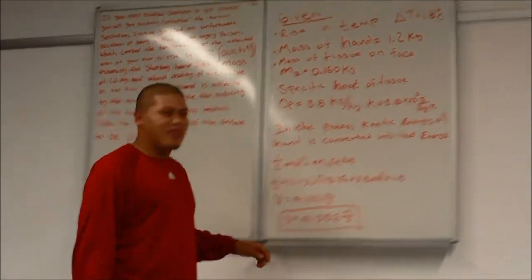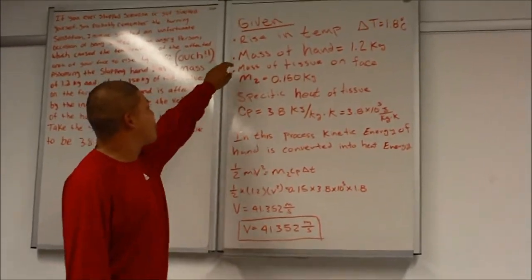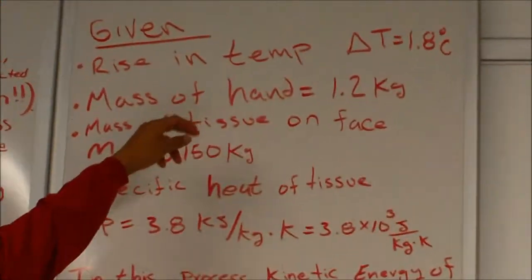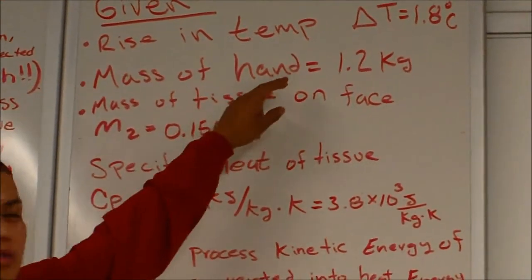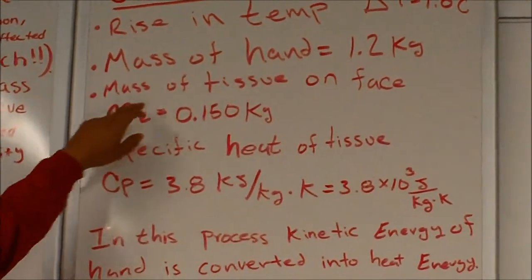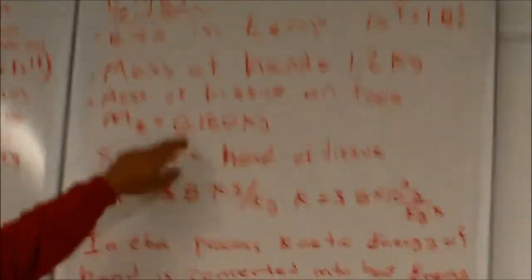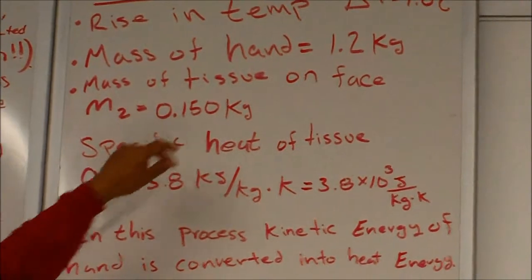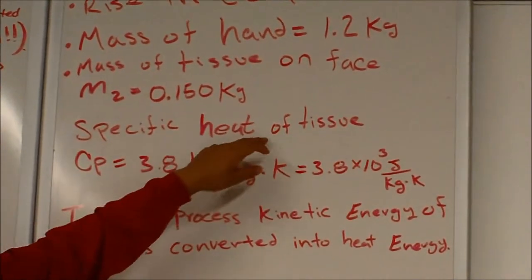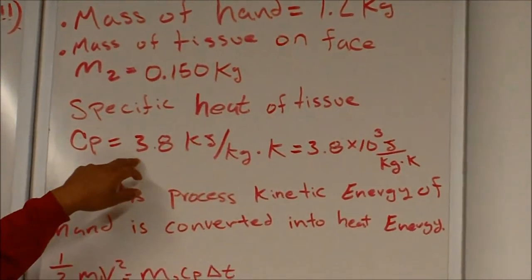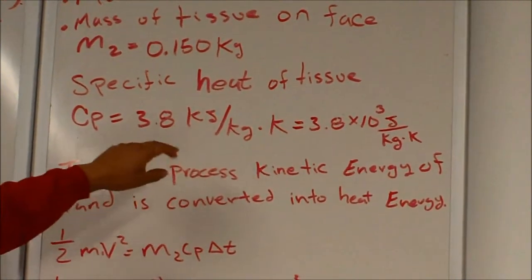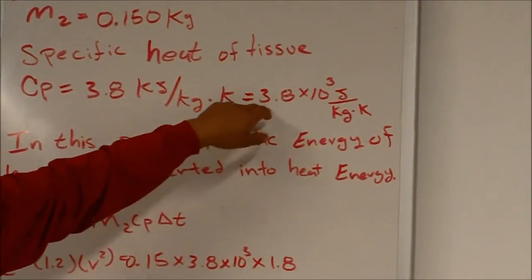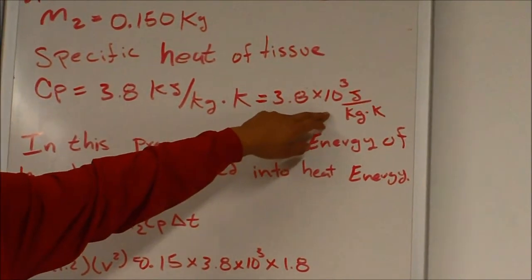I will be solving our slapping problem. In this problem, our givens are the rising temperature is 1.8 degrees Celsius, the mass of the hand is 1.2 kilograms, the mass of the tissue on the face was found to be 0.150 kilograms. The specific heat of tissue is Cp equals 3.8 kilojoules per kilogram, and we have to convert that to 3.8 times 10 to the third joules per kilogram Kelvin.